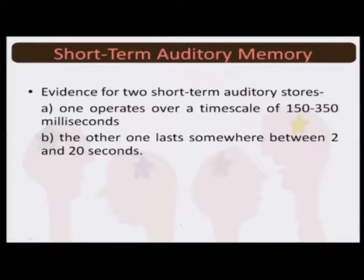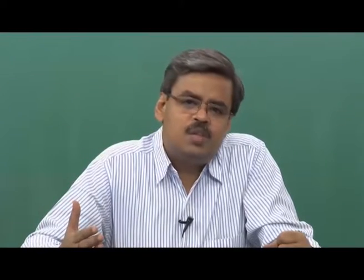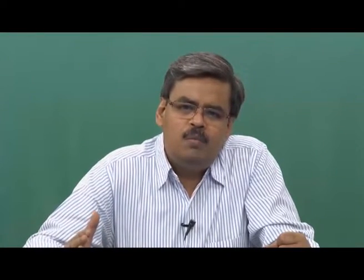In terms of short-term auditory memory, there is evidence for two short-term auditory storage systems: one which operates over a time scale of 150 to 350 milliseconds, and a second one which lasts somewhere between 2 to 20 seconds. So even though it is more acoustic in nature, there could be two different auditory storage systems working.